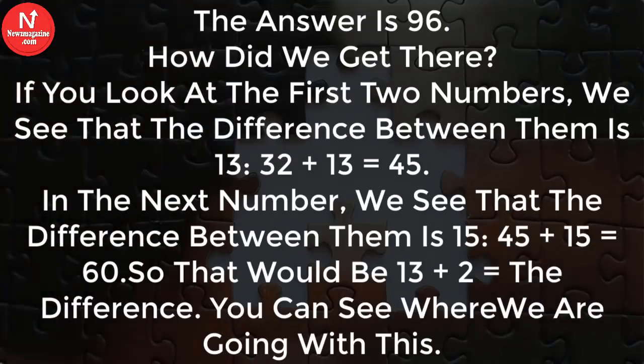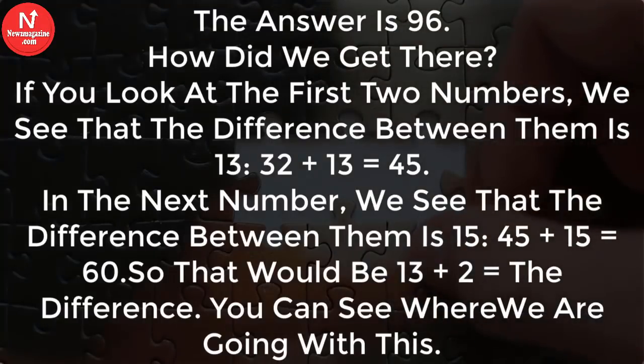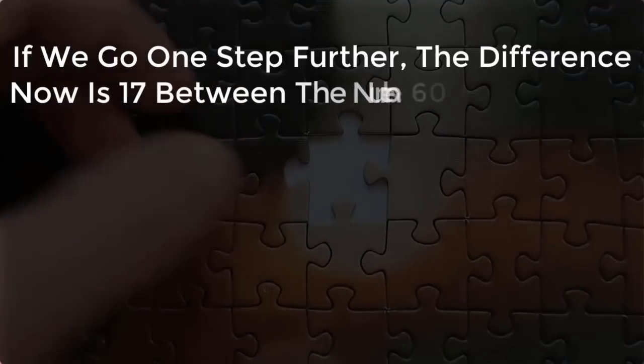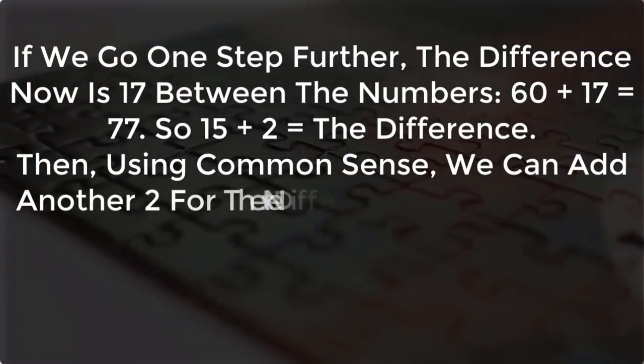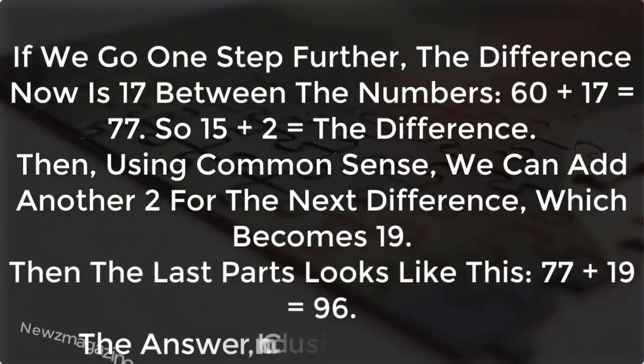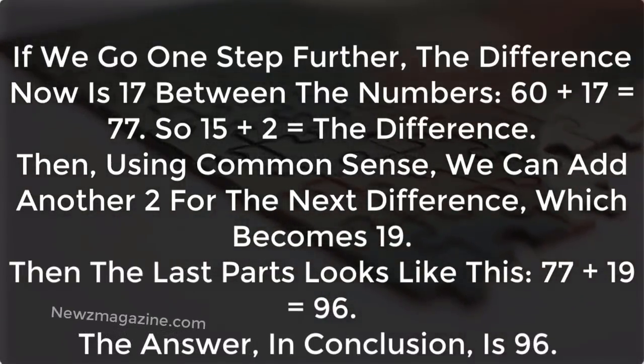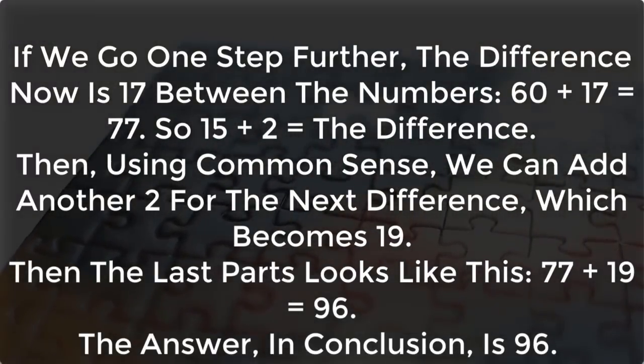So that would be 13 plus 2 equals the difference. You can see where we are going with this. If we go one step further, the difference now is 17 between the numbers. 60 plus 17 equals 77. So 15 plus 2 equals the difference. Then using common sense, we can add another 2 for the next difference, which becomes 19.